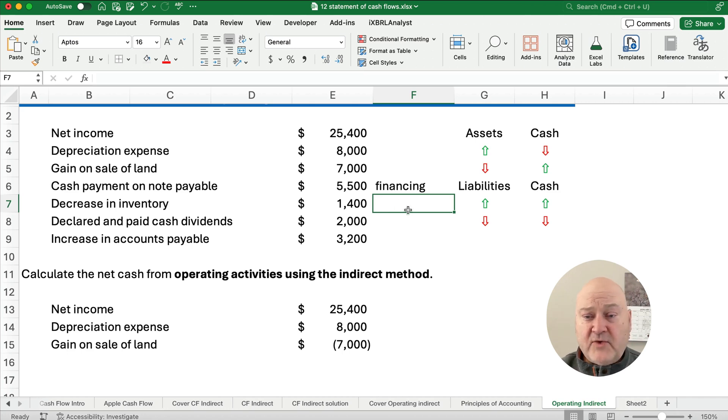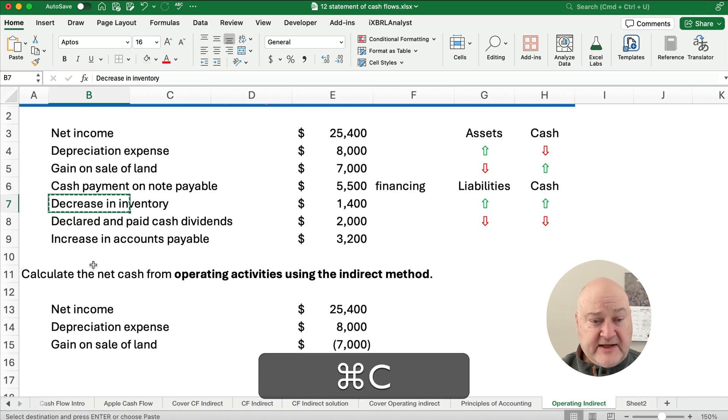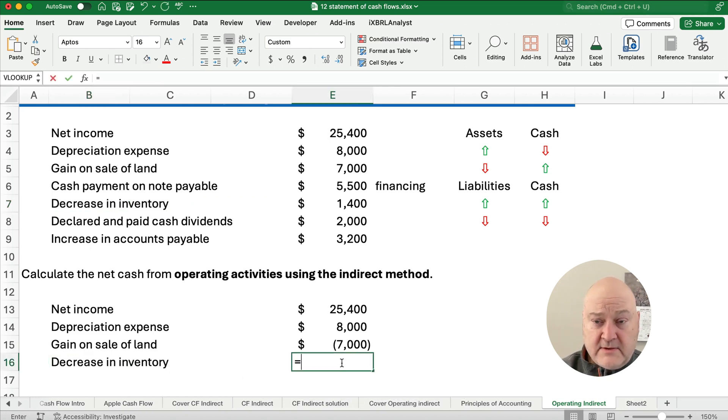Decrease in inventory. Inventory is an asset going down, so it means cash goes up. So we could just simply say decrease in inventory, and inventory goes down, so cash goes up. So this is going to be $1,400.